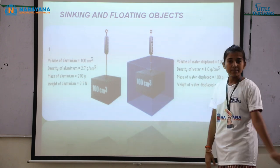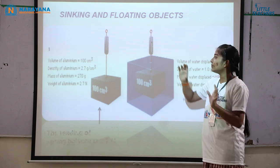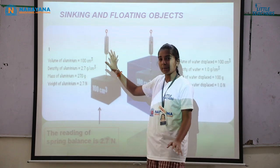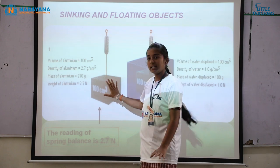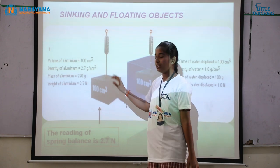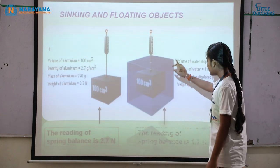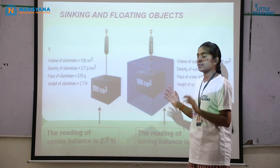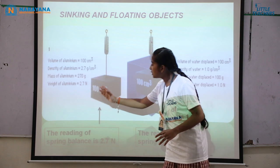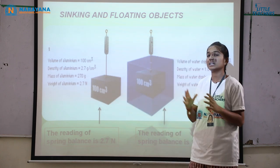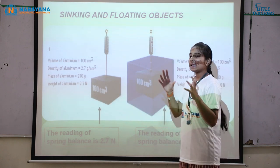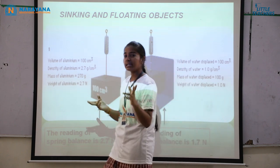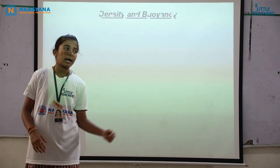The weight of the liquid displaced will be 1 Newton. When you see the reading of the spring balance, when it is in air, it reads 2.7 Newtons, and when immersed in liquid, it reads 1.7 Newtons. In this figure, you can see that compared to the first figure, in the second figure the weight of the aluminium has decreased. This is due to upthrust or buoyant force.